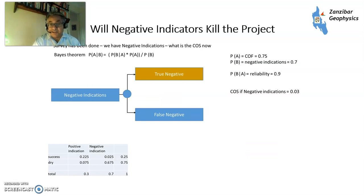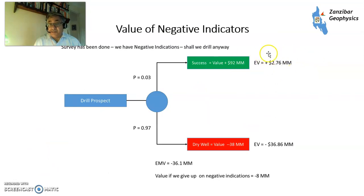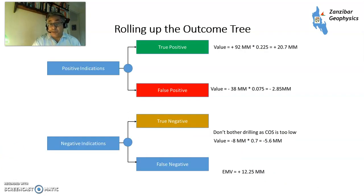What if you get negative indicators — does that kill the prospect? The survey has been done and your chance of having a false negative is only about 3%, so if you've got negative indicators you're not going to bother drilling — you stop now. Putting all the values through the tree gives an EMV of minus $36.1 million in the drilling case, so giving up and walking away for minus $8 million sounds better. Rolling up the full outcome tree — true positives, false negatives, and the no-drill negative branch — gives a total EMV of $12.5 million, substantially more than the $2.5 million before the survey.